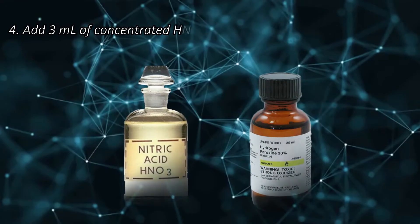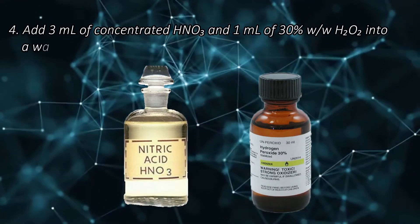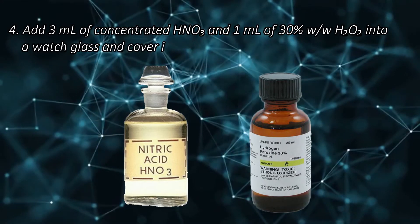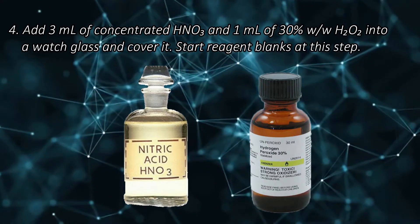Step 4. Add 3 ml of concentrated nitric acid and 1 ml of 30% weight-over-weight hydrogen peroxide into a watch glass and cover it. Start reagent blanks at this step.